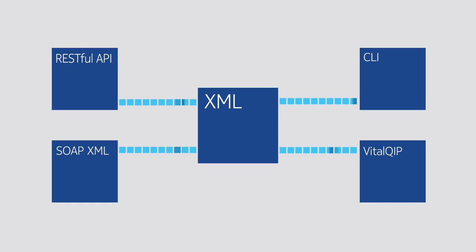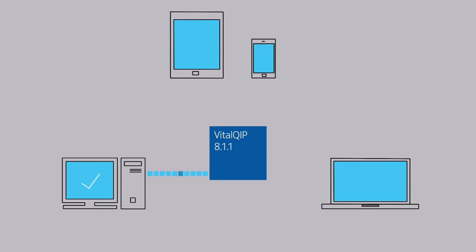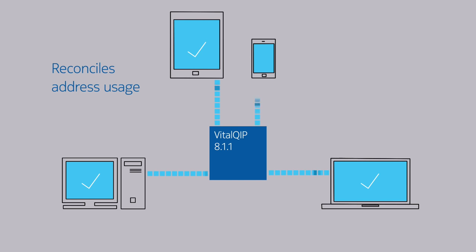Vital QIP also provides detailed discrepancy reports and host auto-discovery. This reconciles IP devices from the subnet to the device. Host auto-discovery also helps improve security by detecting rogue IP devices, aiding administrators by reconciling planned subnet address usage against live production usage.